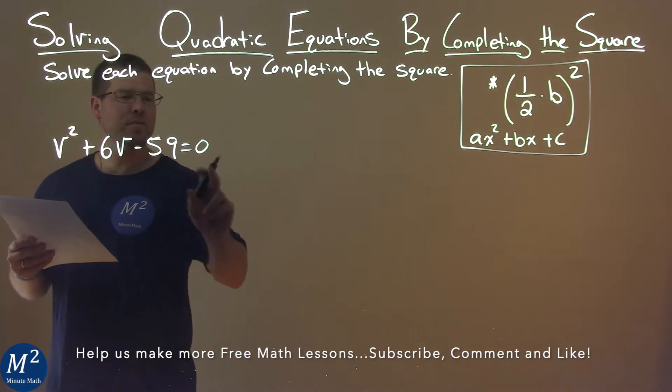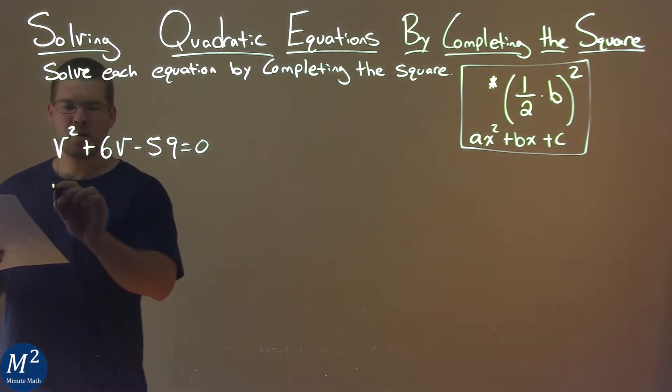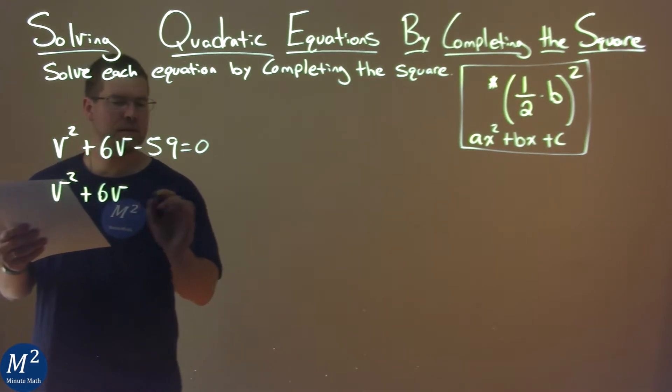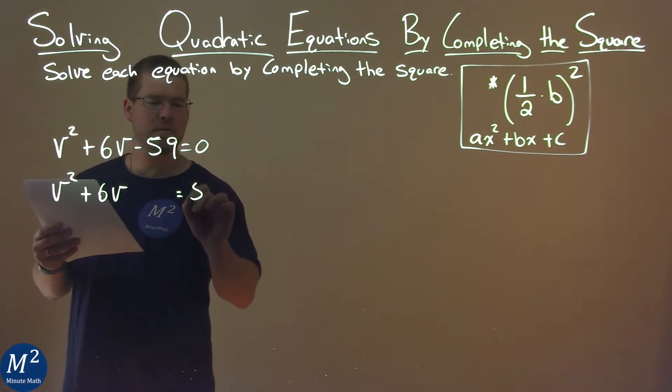First, I want to bring this 59 to the right-hand side. So we have v² + 6v, I'm going to leave some space, equals positive 59.